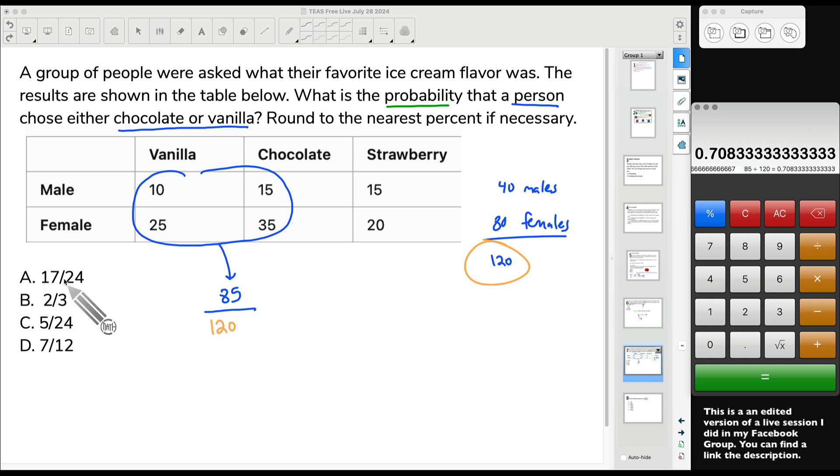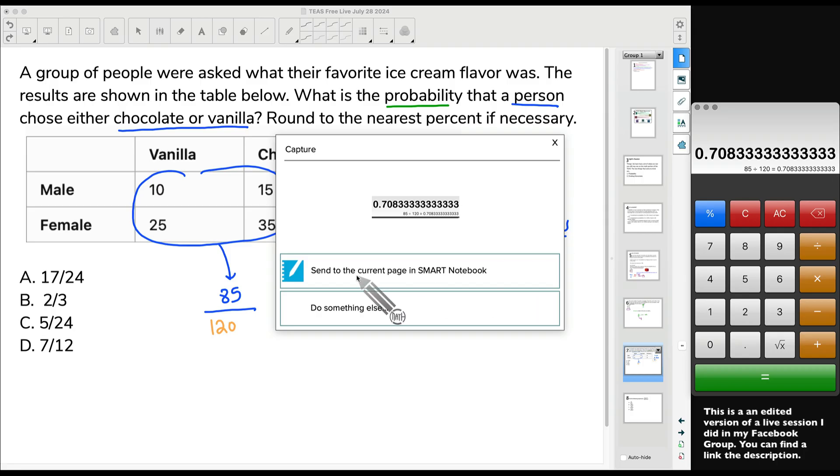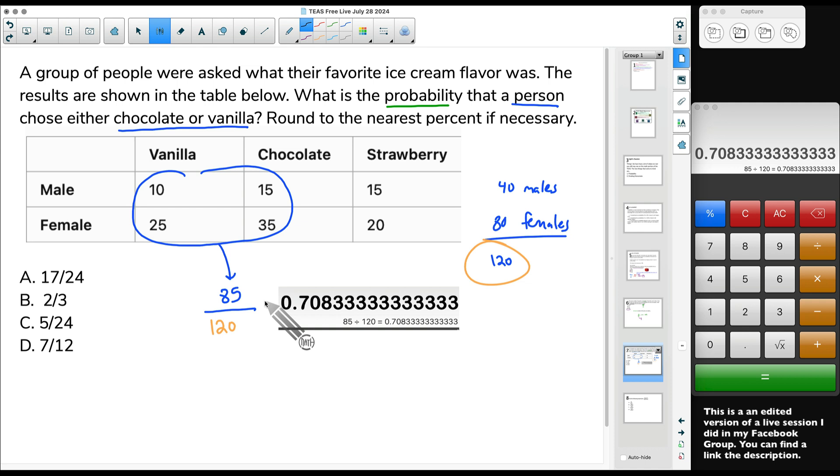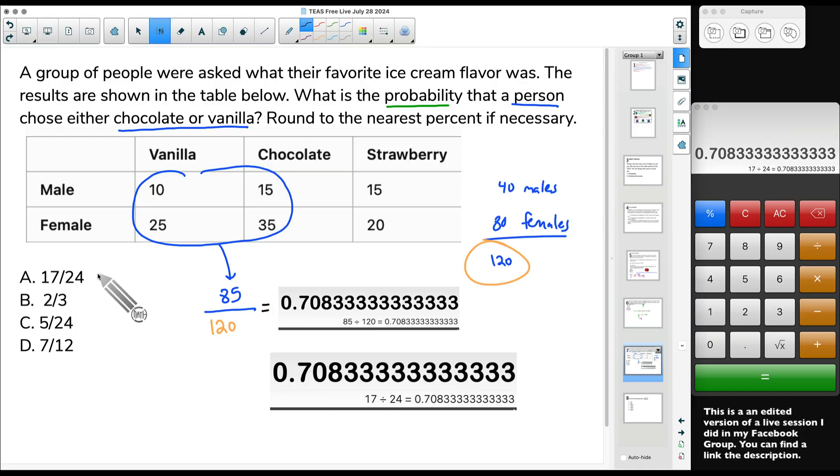The shortcut here is to take 85 divided by 120 and we get this crazy decimal. And if you actually go down your list and divide these to see which one gives you the same decimal. Luckily, if I'm not mistaken, let's take 17 divided by 24. And yeah, check that out. Take the 85 people that either picked chocolate or vanilla divided by a total of 120 folks. There's that probability in a decimal. And that is approximately 71-ish percent. And now the calculator shortcut, go down our list. It just so happens it's the first choice. 17 divided by 24 gives us that same exact decimal. So A is our answer.